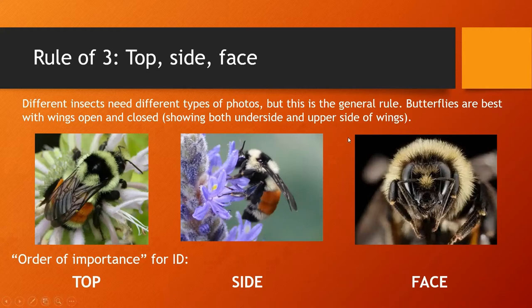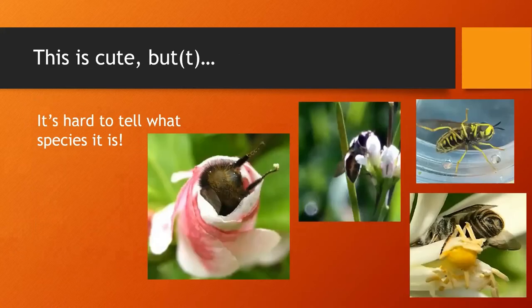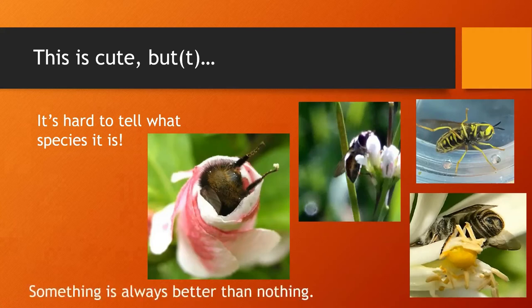Lastly, you can photograph the face — there are still good features there; you can probably tell at least what order of insect it is: beetle, true bug, butterfly versus moth. You might not get to species, but something is always better than nothing. I see bee pictures online quite often where their bums are sticking out of flowers — super cute but we can't often tell what it is. And generally, the ventral view is the worst for identification, but you can still tell this is a fly, or a wasp, and determine the order.